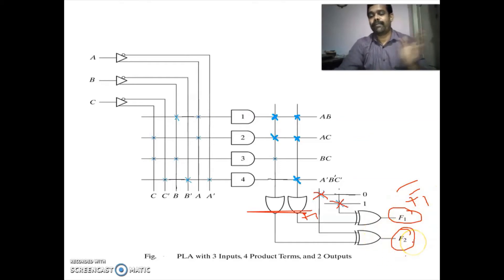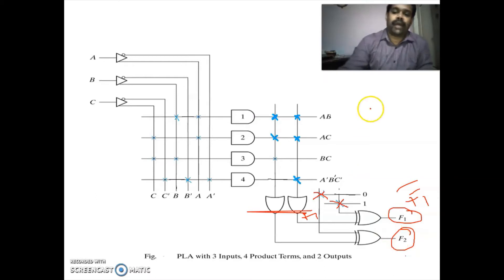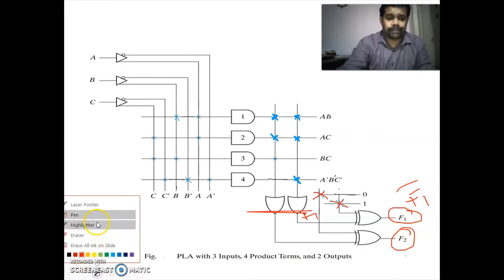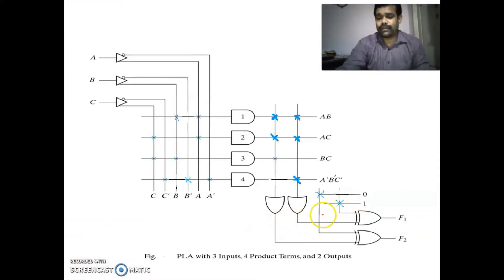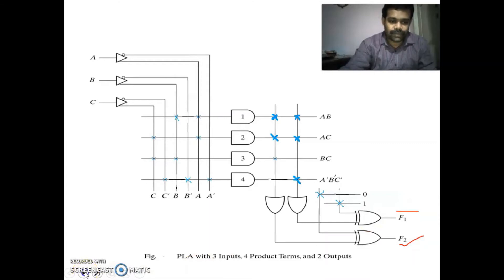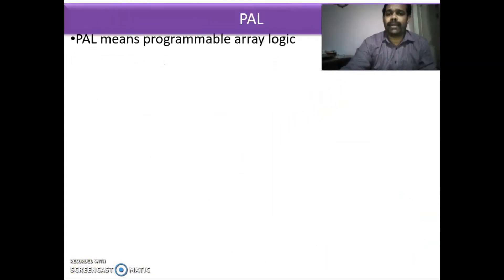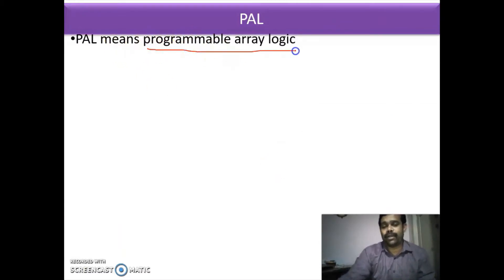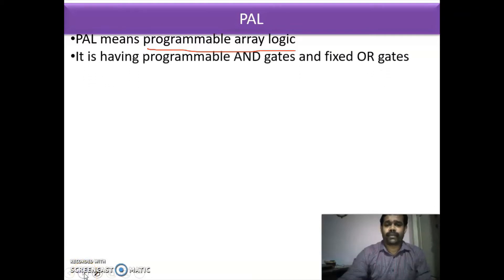From the PLA programming table we understand that function F1 is in complement form, so we must clearly indicate it in the output. To the XOR gate connected to F1, we connect a 1 to one of its inputs. For F2, we connect it to 0. So at the F1 output you get F1-bar, and at F2 you get F2. We have got the correct functions.